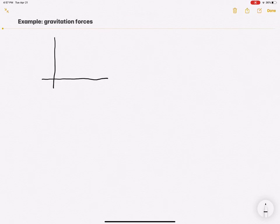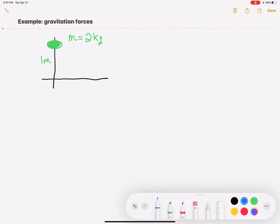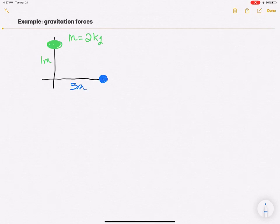So as an example, what we want to do is set up an object up here that has mass. Let's make its mass two kilograms and it's one meter away. Let's take another mass, and it'll be three meters away and its mass will be four kilograms.